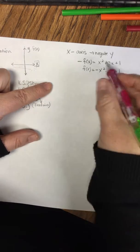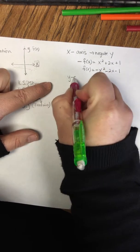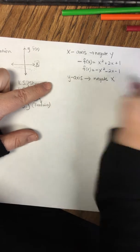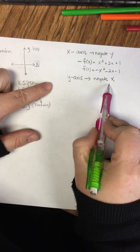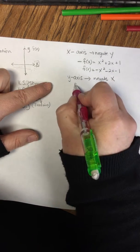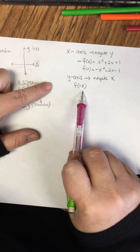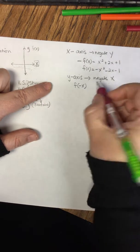Now, if I was going to flip this across the y-axis, I would negate the x. These are opposites. So that means f(-x). That means every time I see an x, I have to replace it with a negative.